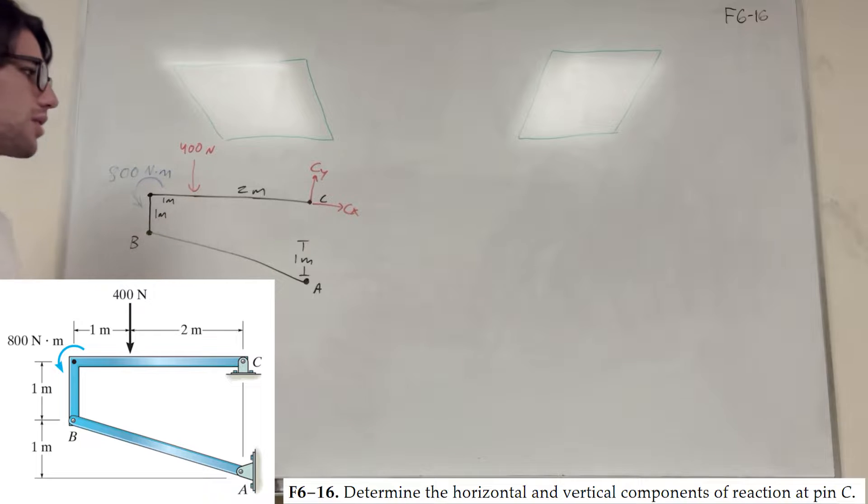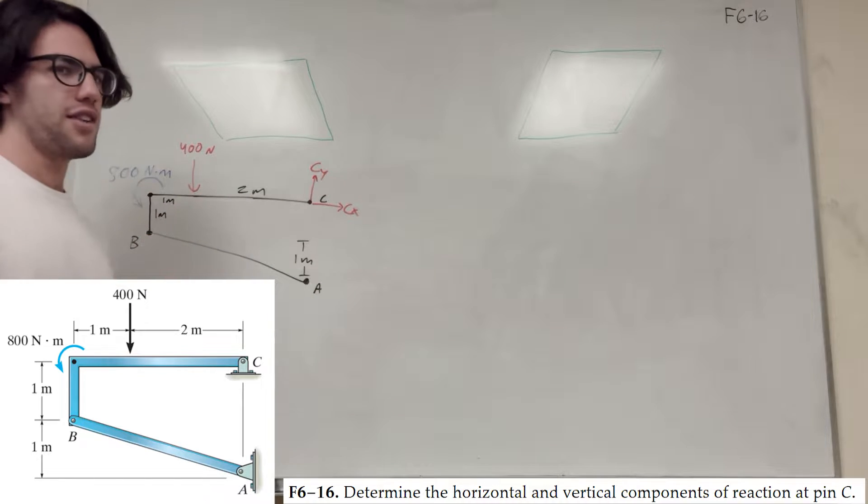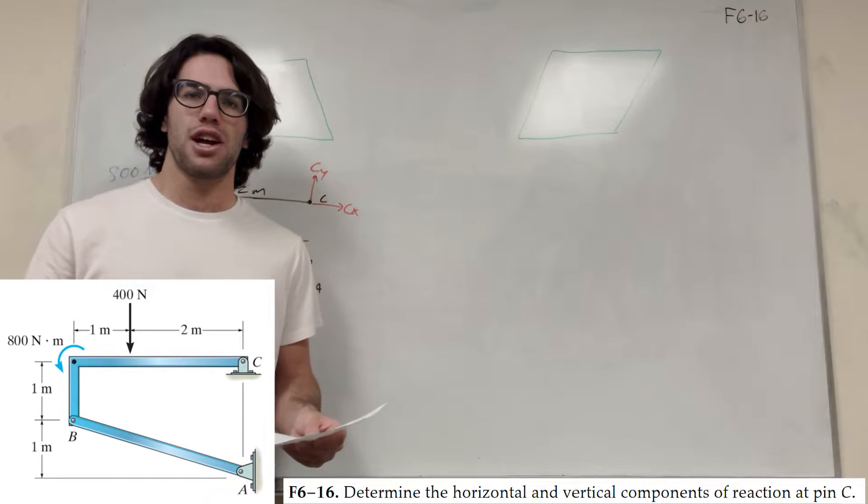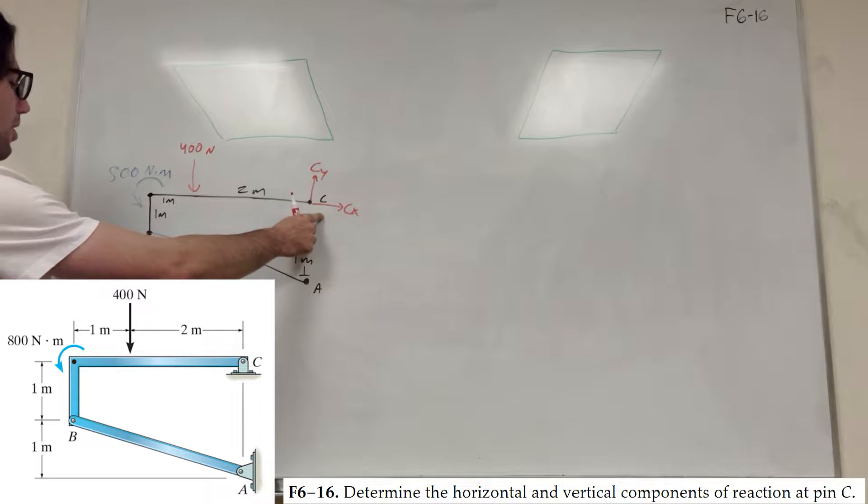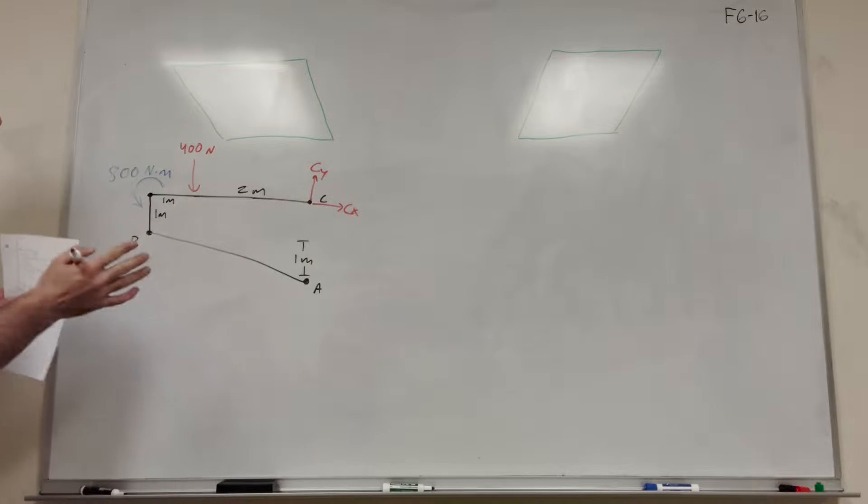So what are we going to do, right? So we have two unknowns in each direction, leaving us with four unknowns. That's going to be too many unknowns to solve. So if we want to find Cy and Cx, we're going to have to simplify this to an easier system.